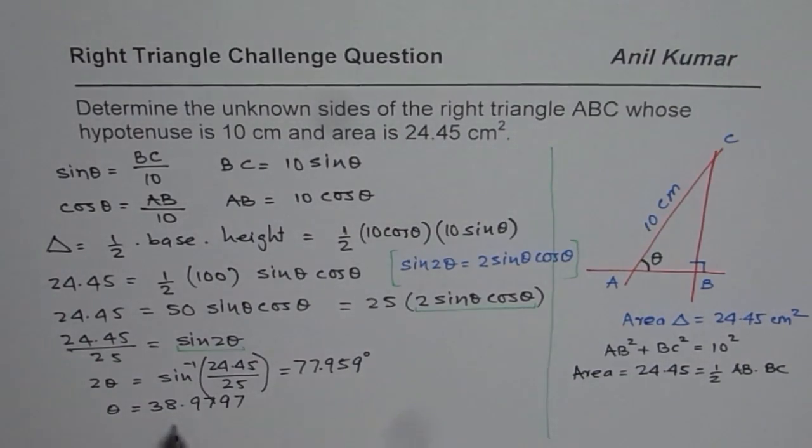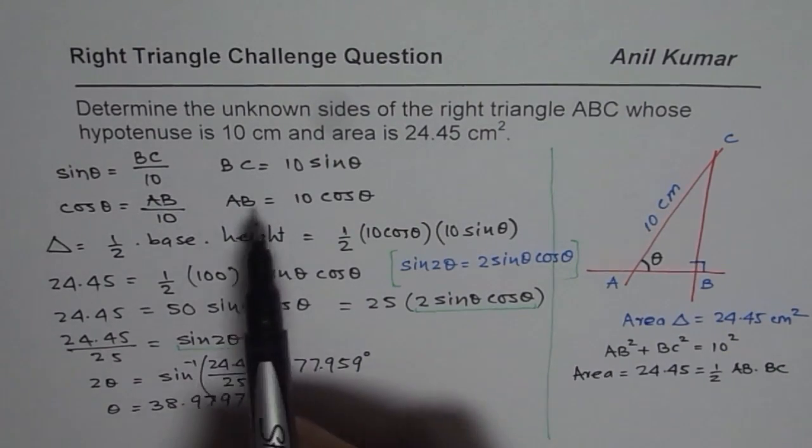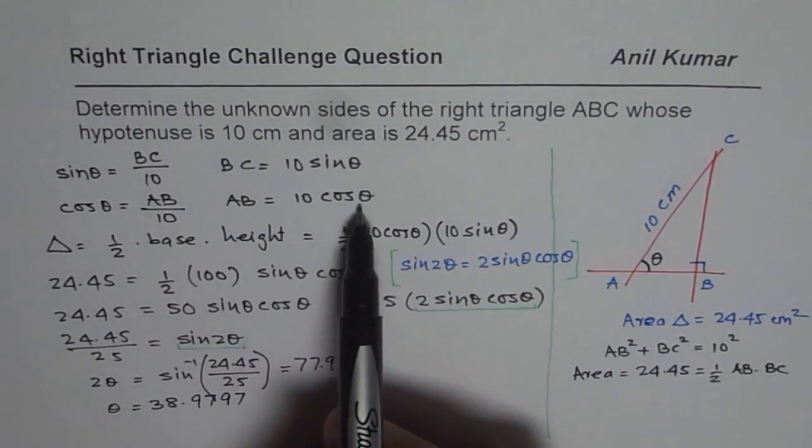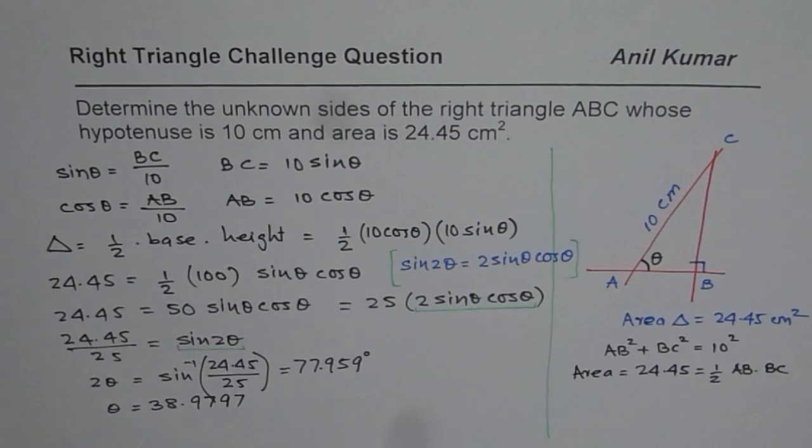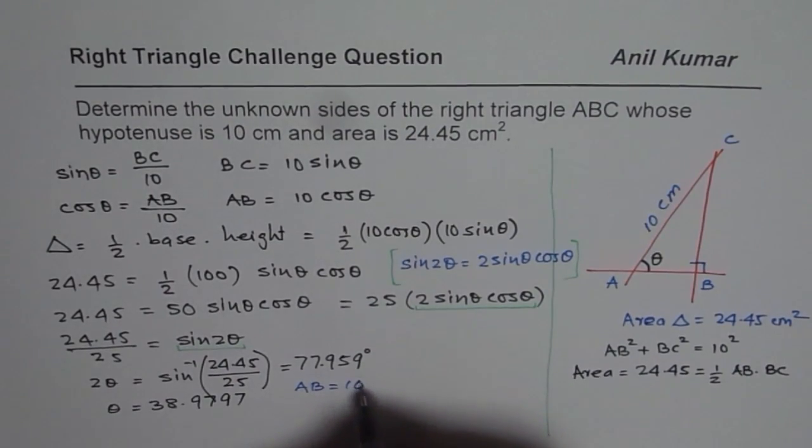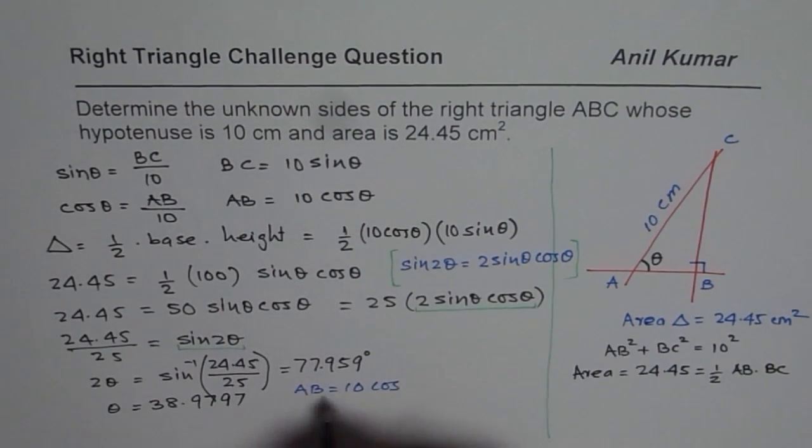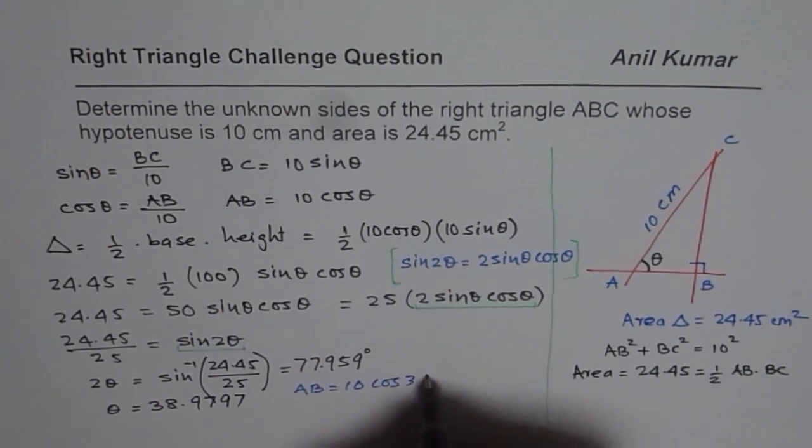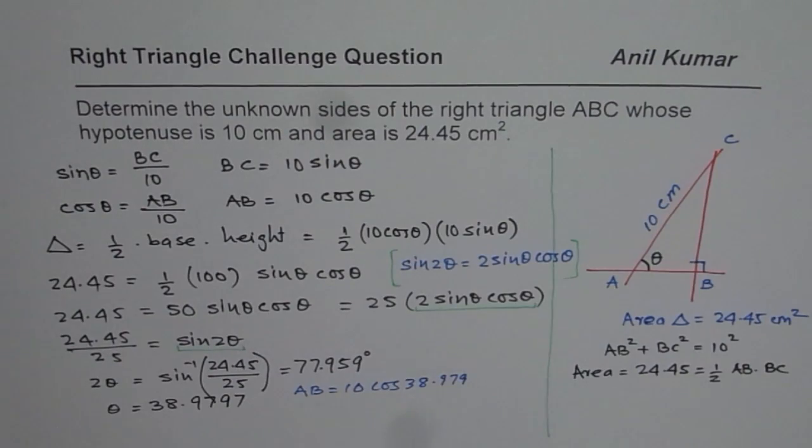So that is theta for us. Now since we know theta, we know the sides AB and BC. Since AB is 10 times cosine theta and BC is 10 times sine theta. You get the point? So now let us write down our answer. And that is AB is equals to 10 times cos of the angle, which is, let's say, 38.979.